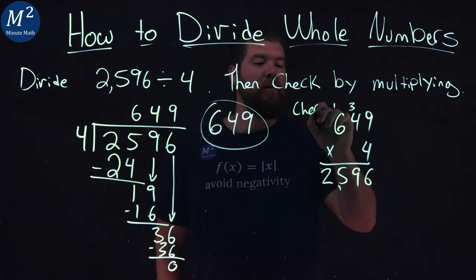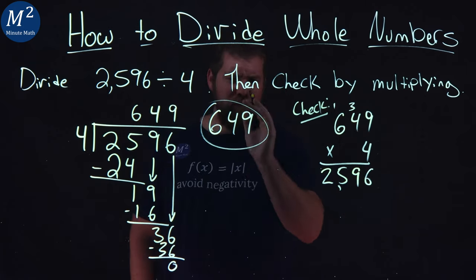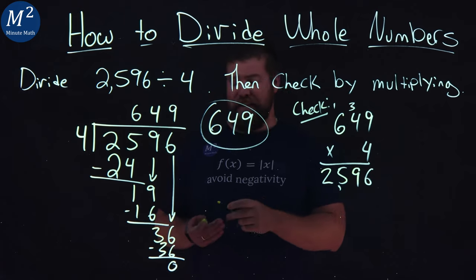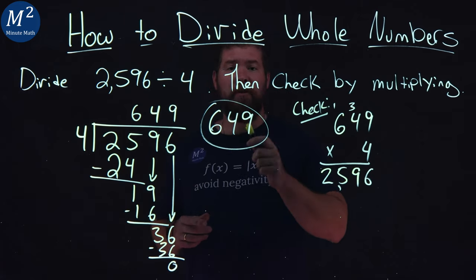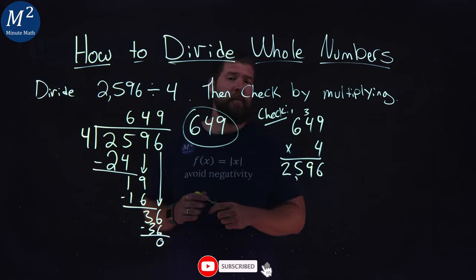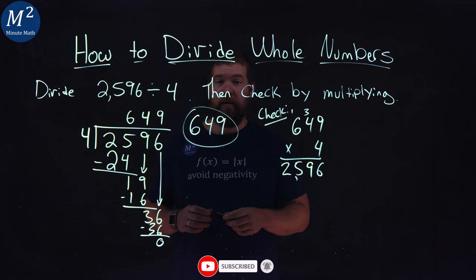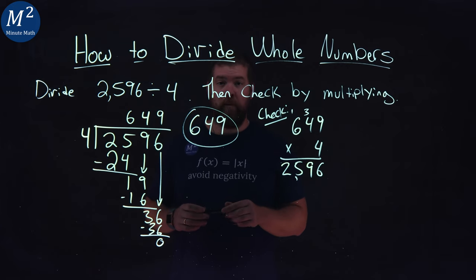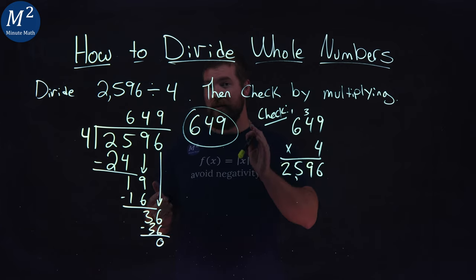So we're good. Our check worked out. So again, our final answer is 649 using long division. I hope you learned something about how to divide whole numbers. If you did, subscribe to this YouTube channel and like this video. This helps us make more free math lessons. Thanks for watching.